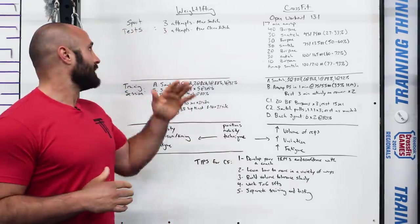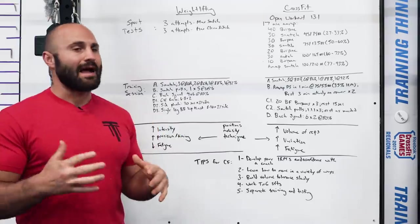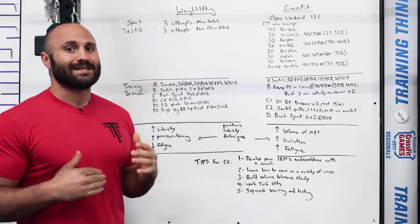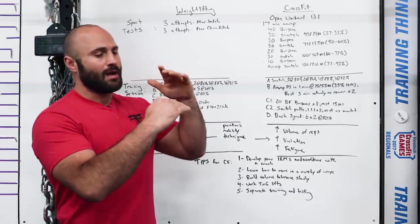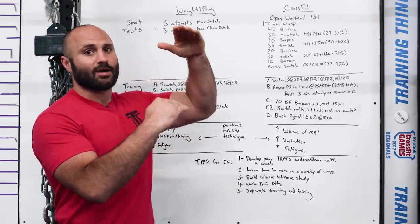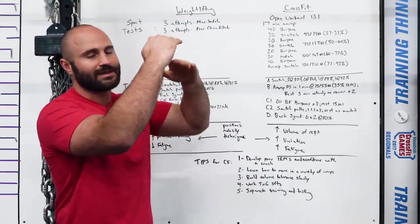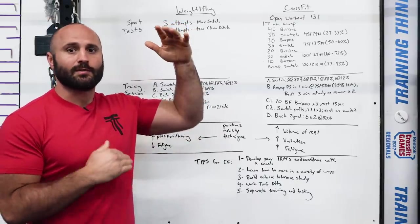The testing demands at a meet are you have three attempts to build to a max snatch, then they reset the platform, they get the group going, and then they do three sets to build to a max clean and jerk. The way it works in a meet is essentially you lift and then people are putting in the next weights that they're going to lift and you lift when your next weight comes up.